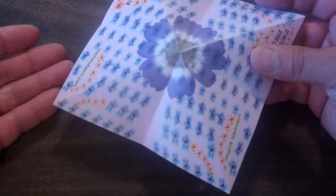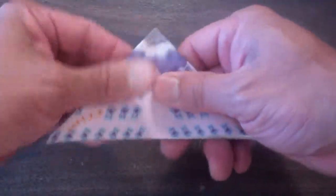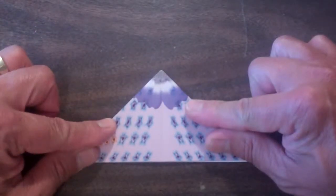Now, with all our creases in place, we're now going to proceed to fold the paper into a triangle base.